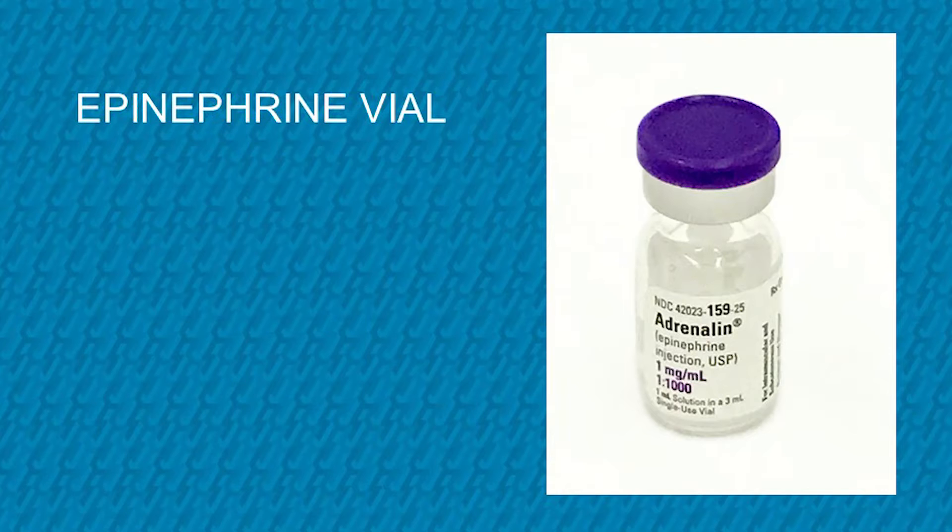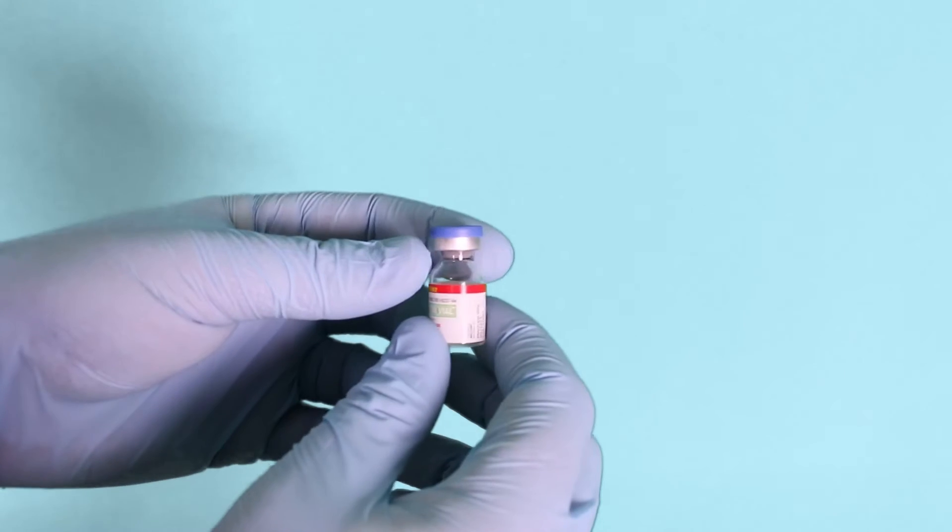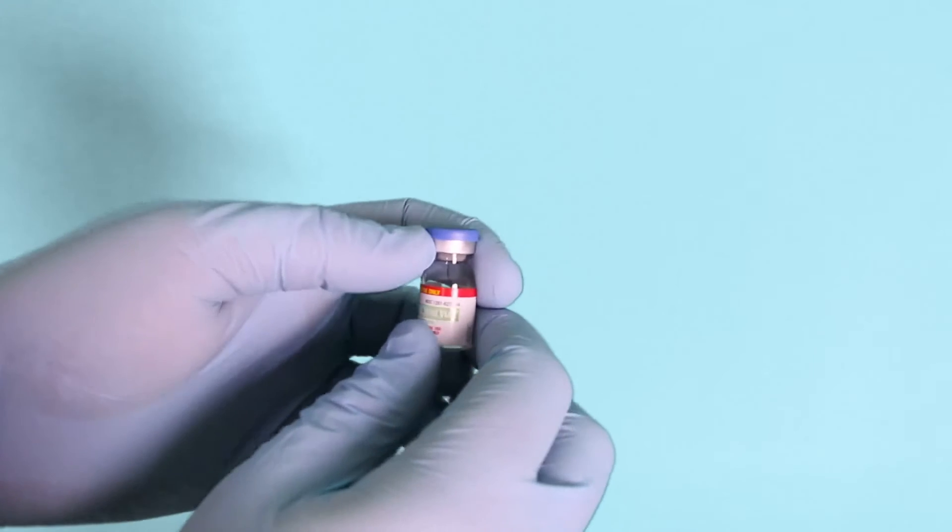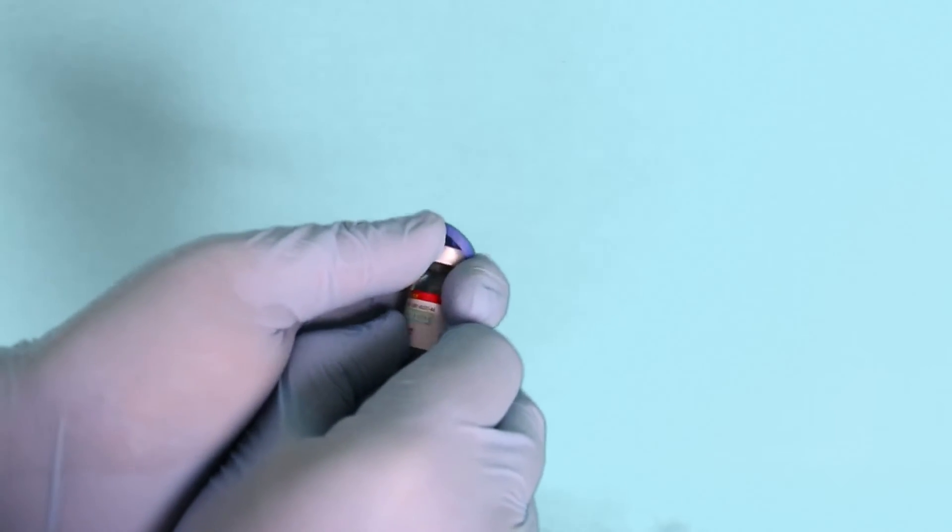First let's talk about the epinephrine vial. The epinephrine 1-1000 1mg 1ml vial is covered with a plastic dust cover that must be removed prior to inserting a needle. The first step will be to remove it like so.